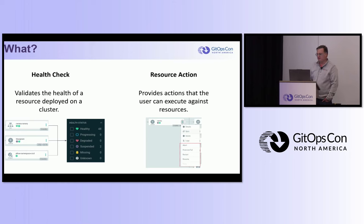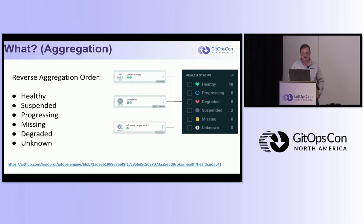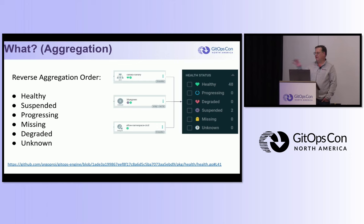If you're not familiar with health checks in Argo CD, what it does is essentially validate the health of your resource - is it healthy, suspended, degraded, or some other status? The resource action allows the user to interact with the resource in an easy way. One thing Argo does is take the health check from a resource and aggregate all of that upwards into the application, going to the worst health status by order of precedence.